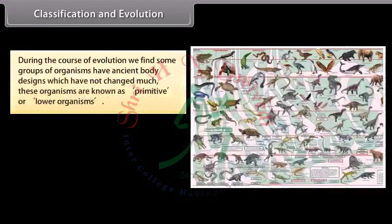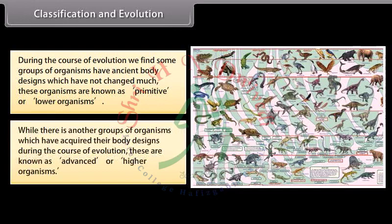During the course of evolution, we find some groups of organisms have ancient body designs which have not changed much — these organisms are known as primitive or lower organisms. While another group of organisms have acquired their body designs during the course of evolution; these are known as advanced or higher organisms.